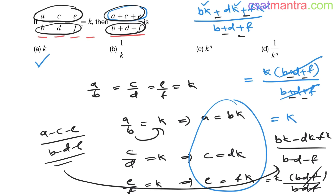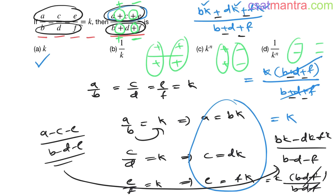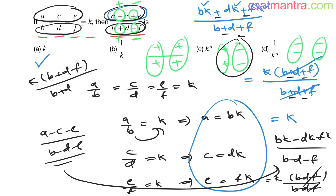The key rule is: whatever sign you have in the numerator — positive or negative — the corresponding denominator term must carry the same sign. So valid combinations include all plus, plus-minus-plus-minus, or all minus. As long as the sign in the numerator and denominator match for each term, the value remains k. For example, (a+c−e)/(b+d−f) = k into (b+d−f)/(b+d−f) = k.